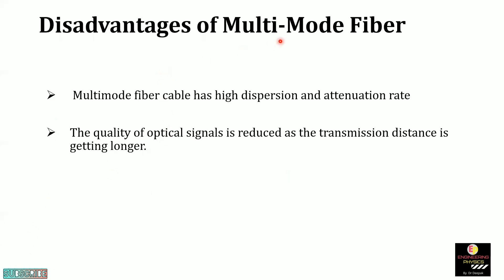Disadvantages of multi-mode fibre: multi-mode fibre has high dispersion and attenuation rate. Dispersion means broadening of the pulse, and attenuation means reduction in the quality of the optical signal.